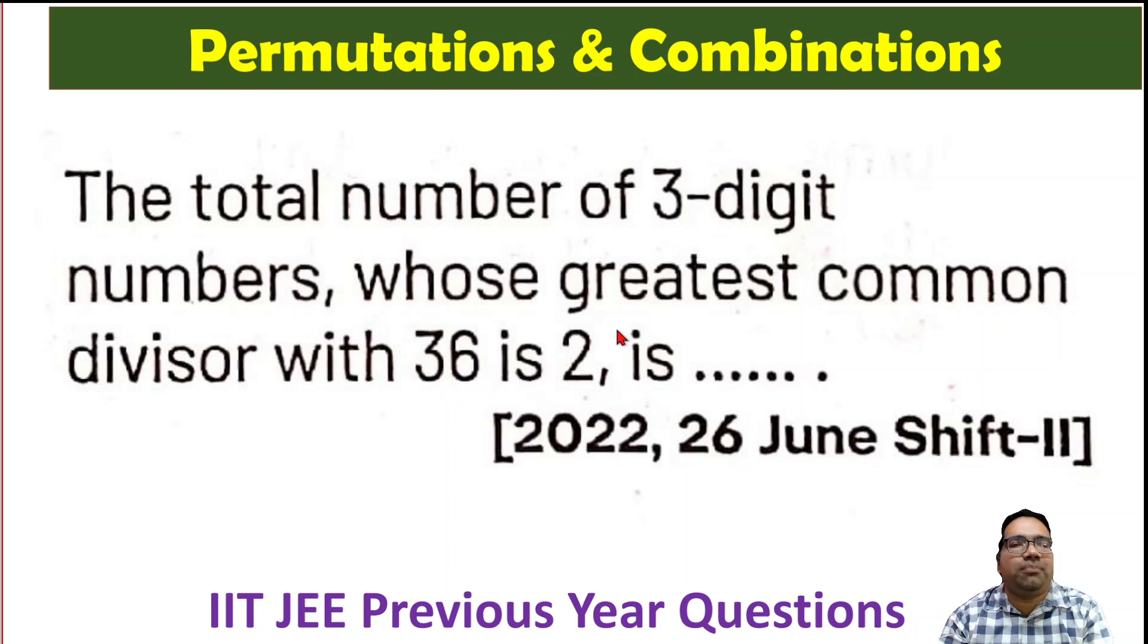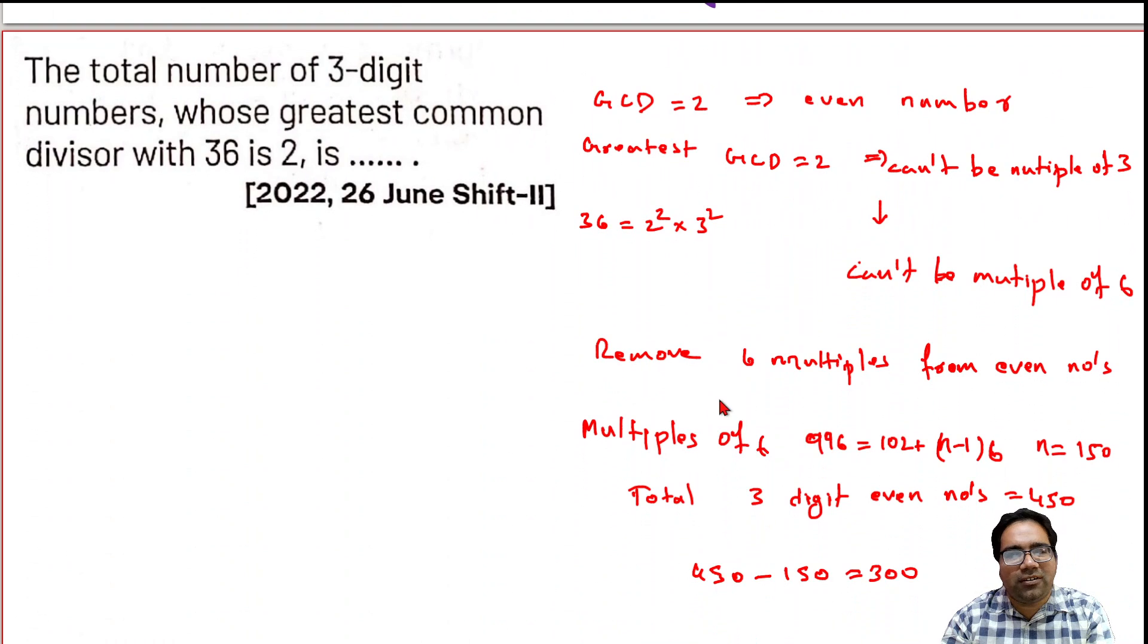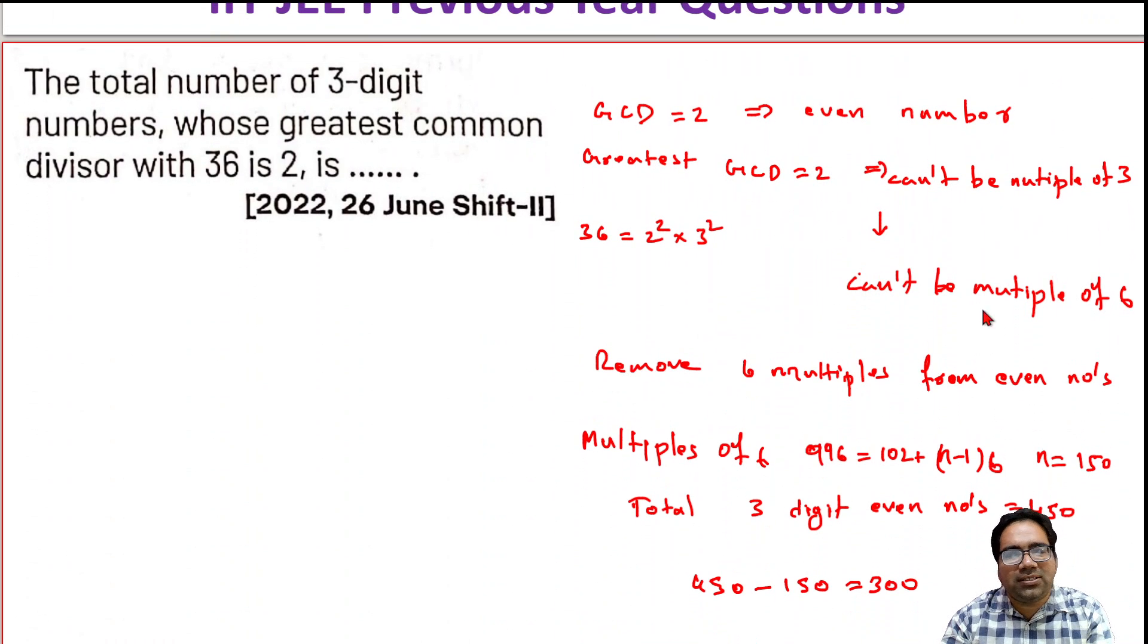At the same time, it cannot be a multiple of 3. That means it's an even number that cannot be a multiple of 6, because if it's a multiple of 2 and also a multiple of 3, then it's a multiple of 6. So basically, we're looking for all even numbers which are not multiples of 6, because it cannot be a multiple of 3 but it has to be a multiple of 2. That means it cannot be a multiple of 6.